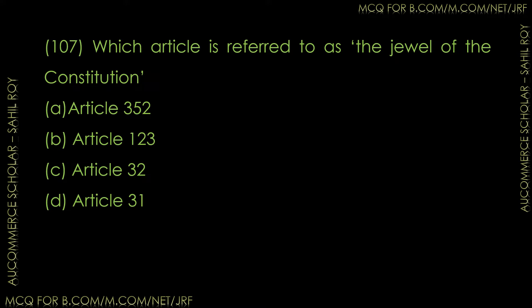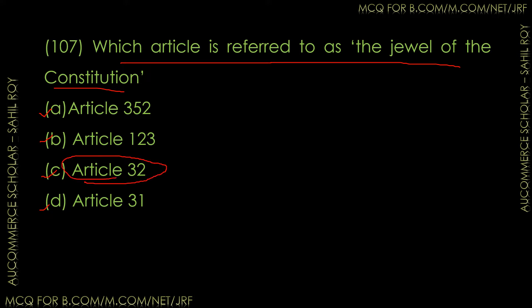Question number 107: Which article is referred to as the jewel of the Constitution? Options include Article 23, Article 32, and Article 31. The correct answer is Option C — Article 32. Article 32 is referred to as the jewel of the Constitution, and it is also considered the heart and soul of the Constitution.